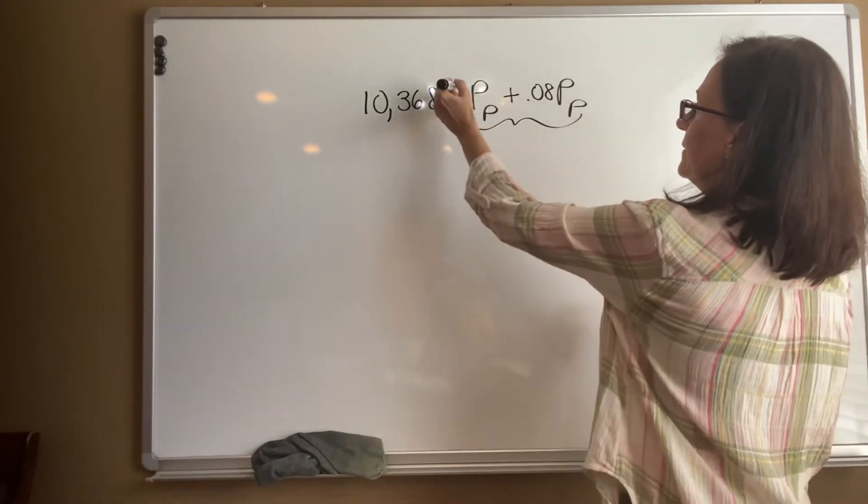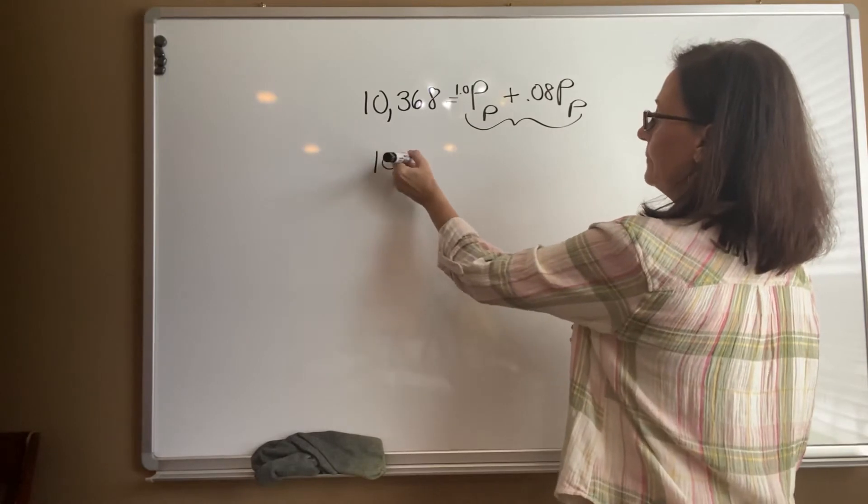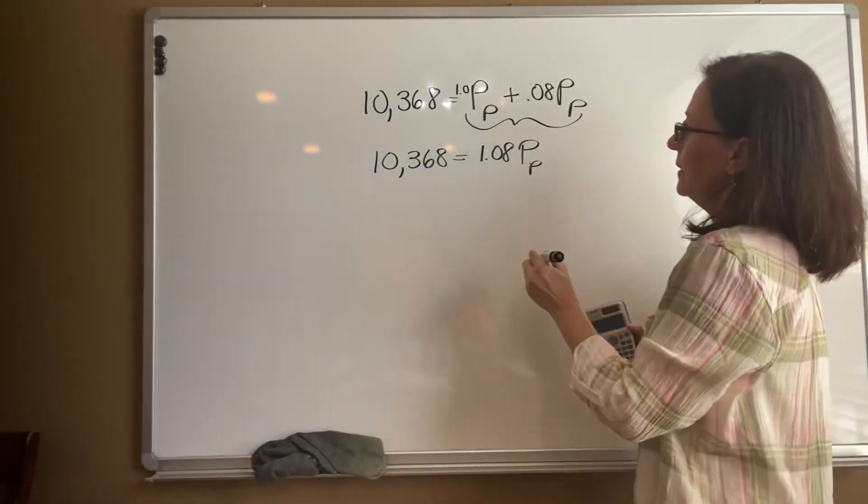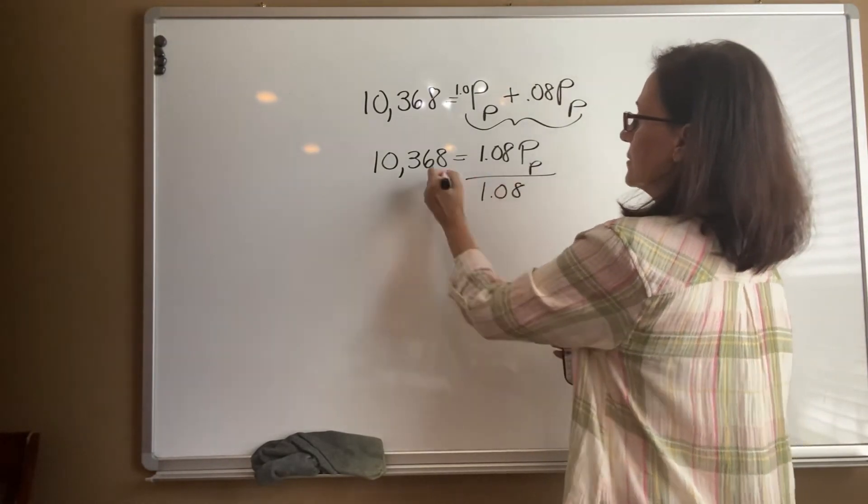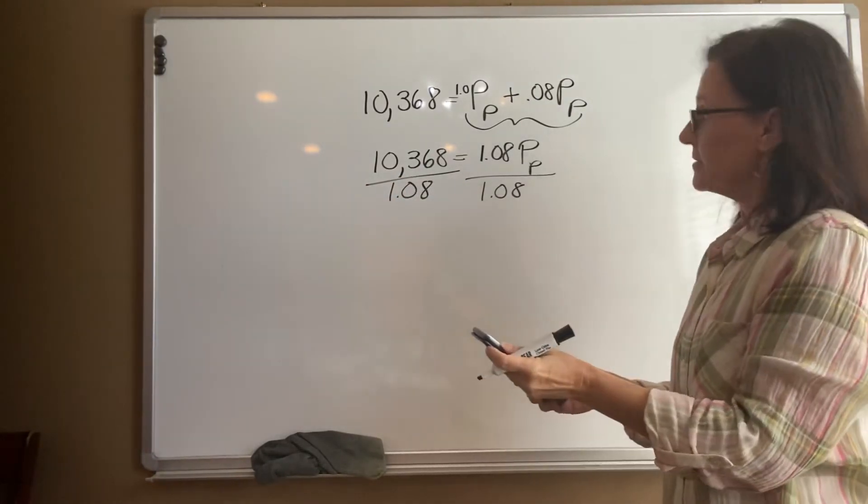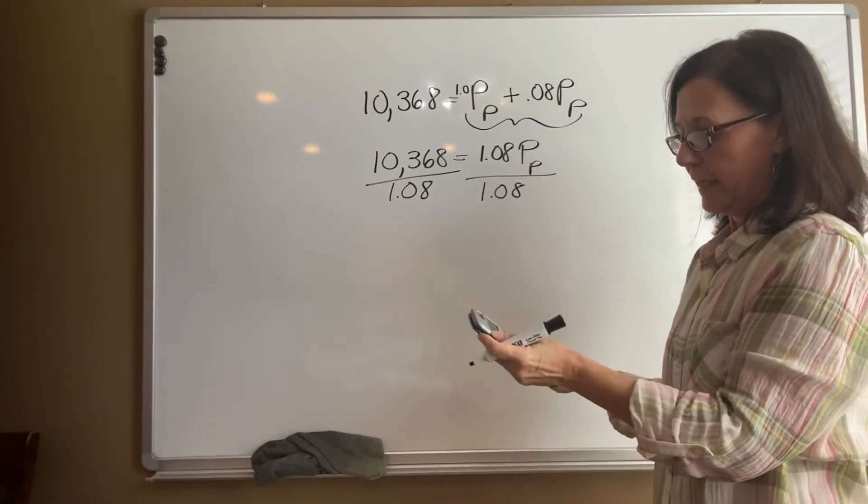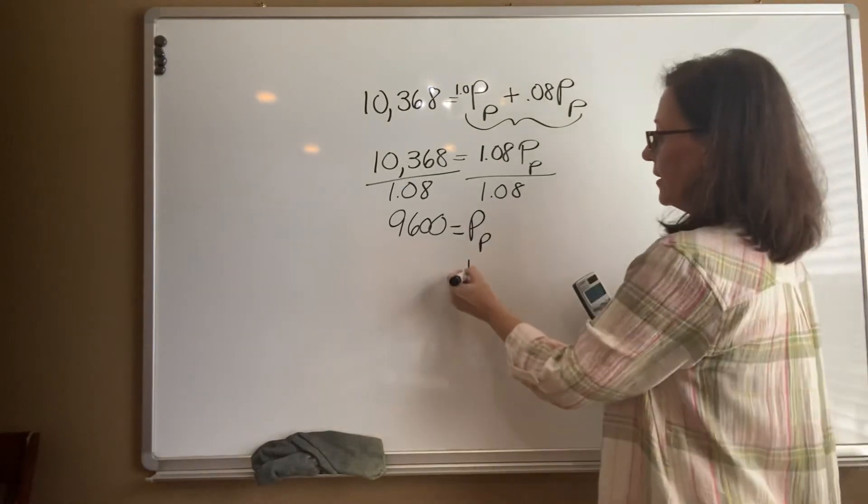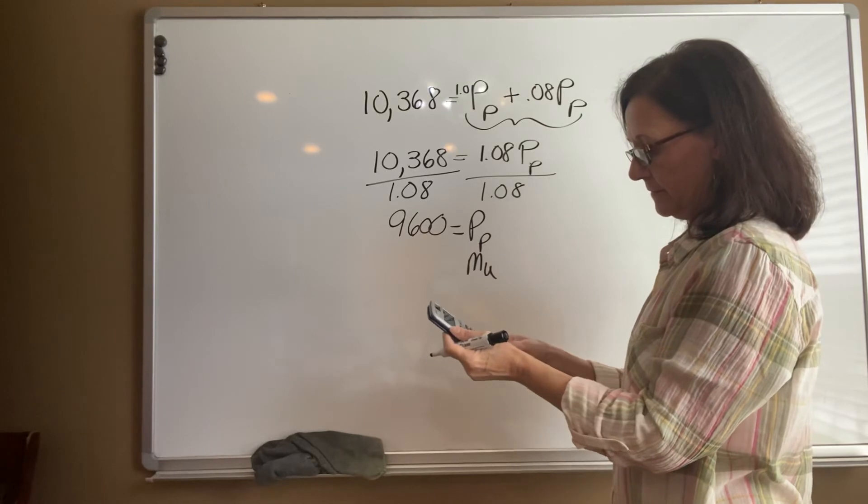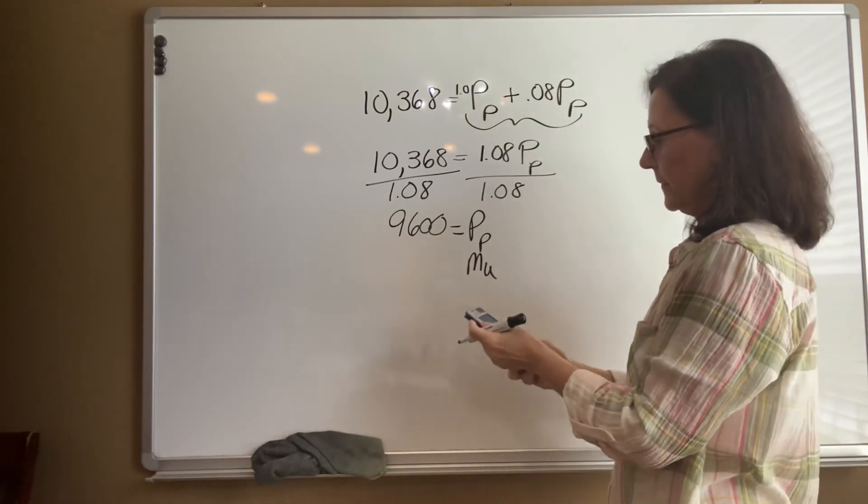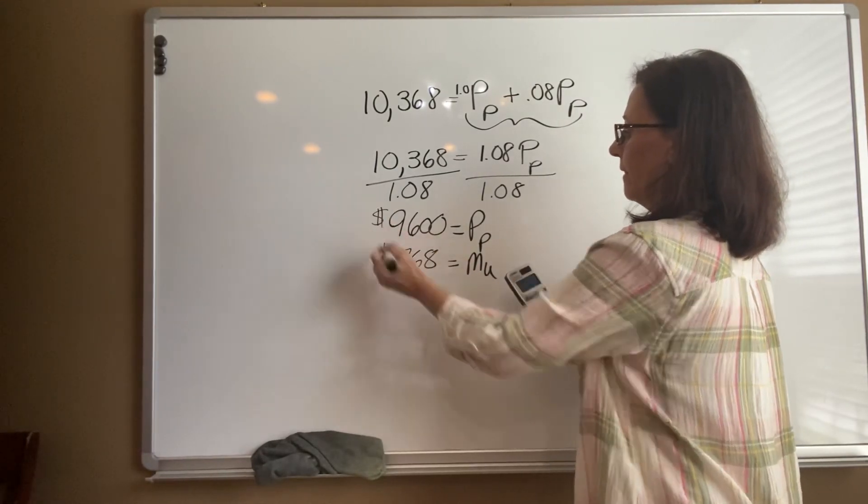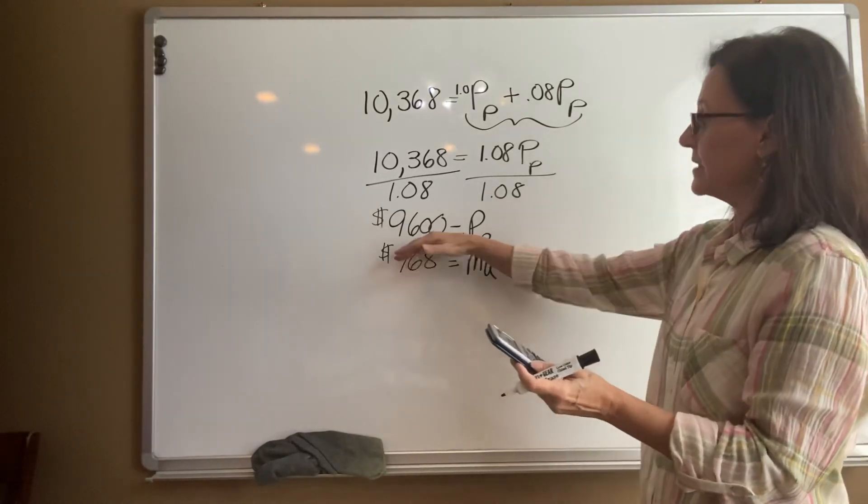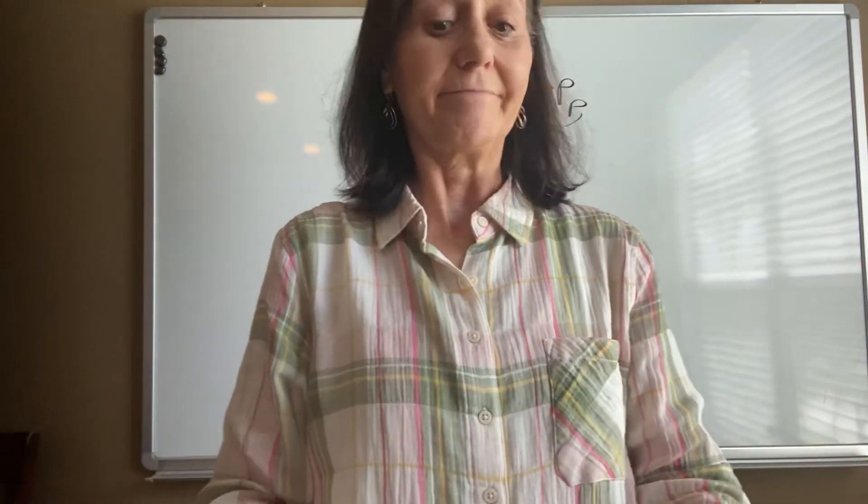So on the right-hand side, this is 1.0, so we just combine our like terms. We have $10,368 divided by 1.08. So the purchase price was $9,600. So then our markup has got to be that $10,368 minus the $9,600, which is $768. But is that 8% of the $9,600? So you should check yourself. And that in fact is $9,600 times 0.08 is $768. That is lesson 101.